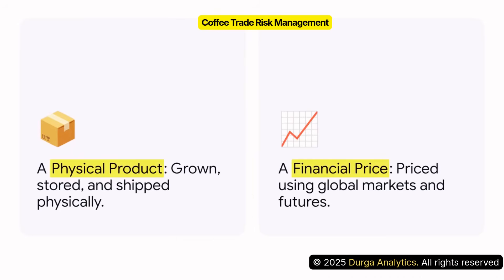Now, the first and maybe the most crucial concept to really get your head around is this core conflict. On one hand, coffee is a tangible, physical thing — it's grown, it's stored, it's shipped. But on the other hand, its price is set in an abstract global financial market, usually referenced to a futures exchange like ICE.